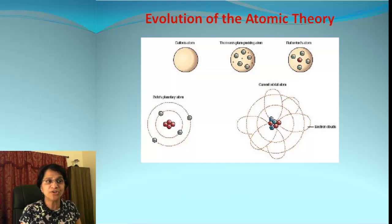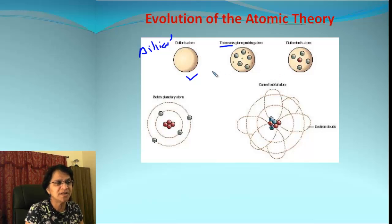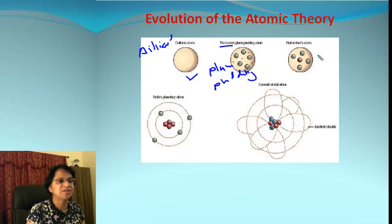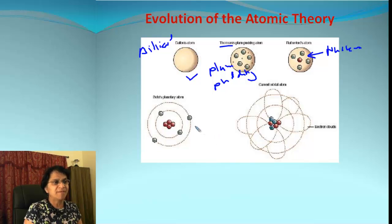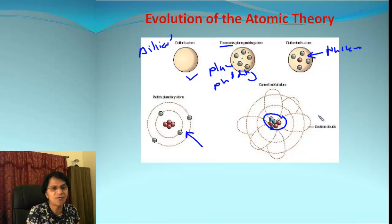In Schrödinger's model, electrons do not actually orbit the nucleus; they are found somewhere in regions around the nucleus based on energy, described using a wave function. This picture gives a summary of the evolution of atomic theory: Dalton's billiard ball solid sphere, then Thomson's plum pudding model with electrons, then Rutherford's model with a defined nucleus, then Bohr's planetary model, and finally Schrödinger's model with centrally placed protons and neutrons surrounded by an electron cloud. I hope you enjoyed the video — see you in the next one, bye bye!